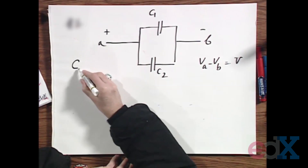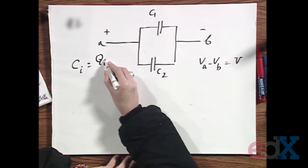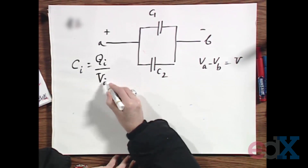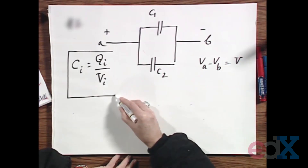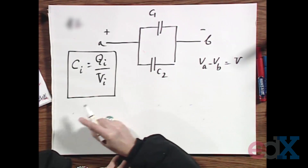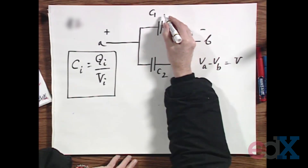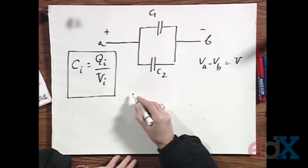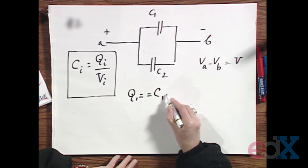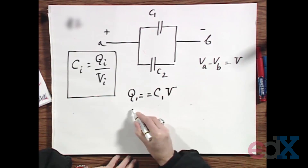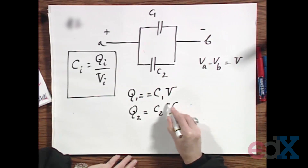What always holds is that C_i, which is capacitor i, always has a charge Q_i on it if the voltage over that capacitor is V_i. This you can always use — it's always true. Now both capacitors see the same voltage over them. Therefore, Q_I equals C_I times V, and Q_II equals C_II times V.